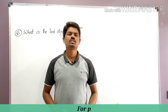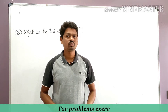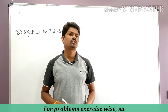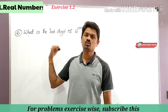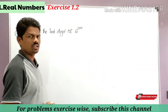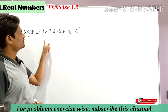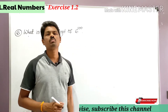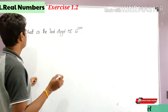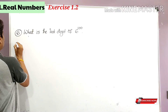Hello students, welcome to my channel Learn More Maths. My name is Barak Mar. Today we are going to solve a problem from the chapter Real Numbers, exercise 1.06. The problem is: what is the last digit of 6 to the power 100?